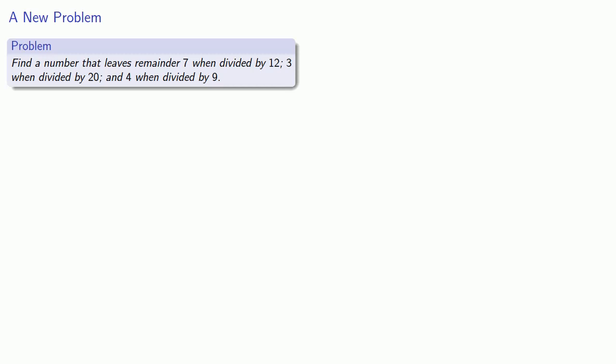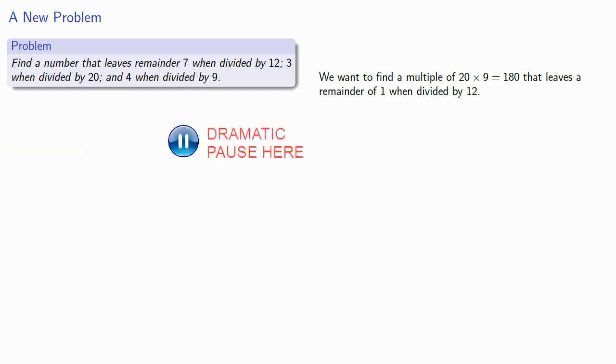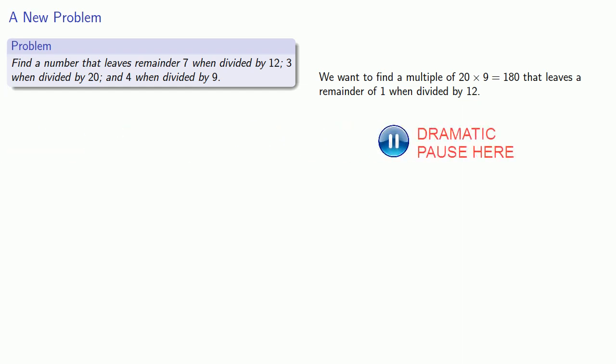We might try to solve the problem as follows. We want to find a multiple of 20 times 9, which is 180, that leaves a remainder of 1 when divided by 12. But we can't, because every multiple of 180 is also a multiple of 12, and so the remainder is always 0.